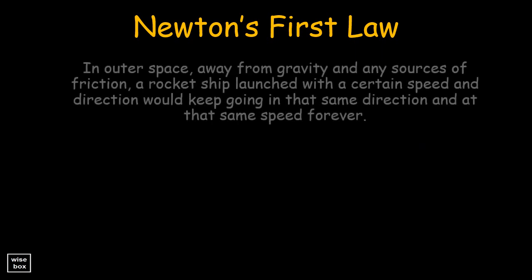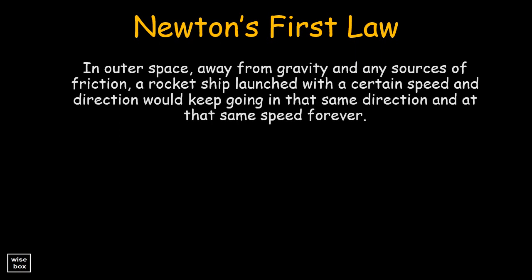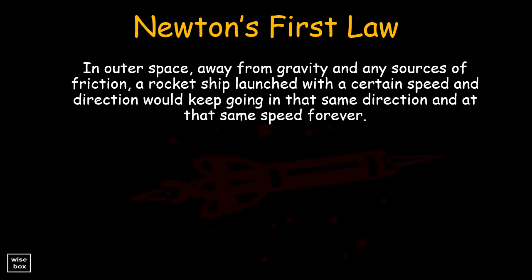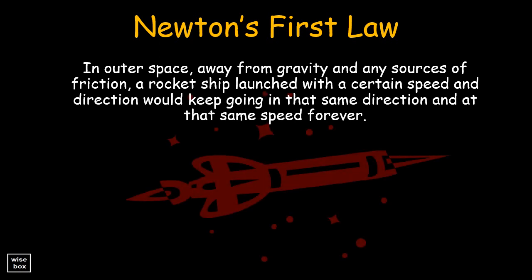In outer space, away from gravity and any sources of friction, a rocket ship launched with a certain speed and direction would keep going in that same direction and at that same speed forever.